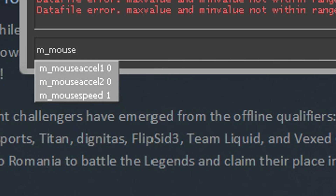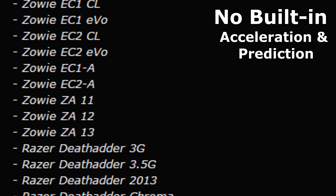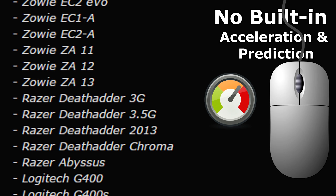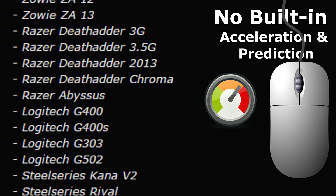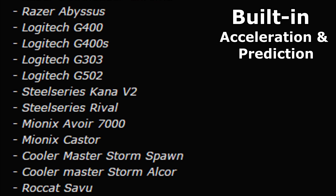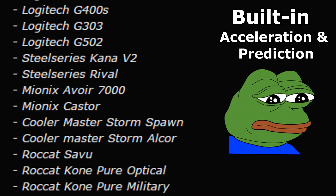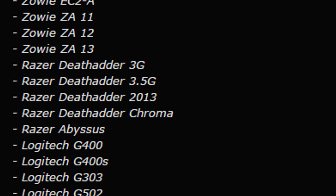Now one more important thing to check is actually your mouse. I've provided a link with information on a list of mice made without built-in acceleration and prediction. When I mean prediction, I mean a sensor in the mouse that removes very small movements from the tracking, which can result in not following your exact movements. Acceleration and prediction built into the mouse is bad for your gaming experience, so if you take mouse acceleration very seriously, I highly recommend one in that list.